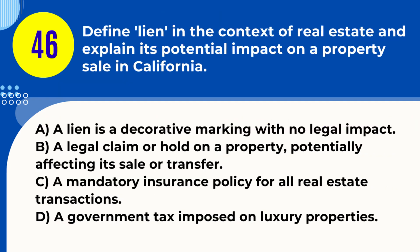Question 46. Define lien in the context of real estate and explain its potential impact on a property sale in California. A. A lien is a decorative marking with no legal impact. B. A legal claim or hold on a property, potentially affecting its sale or transfer. C. A mandatory insurance policy for all real estate transactions. D. A government tax imposed on luxury properties. Answer: B. A legal claim or hold on a property, potentially affecting its sale or transfer. Explanation: A lien is a legal claim against a property for unpaid debts, which can complicate or impede the sale of the property until the lien is resolved.